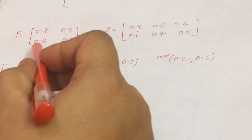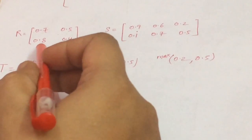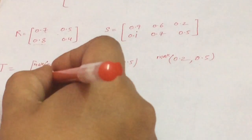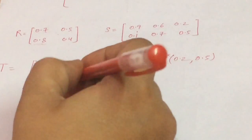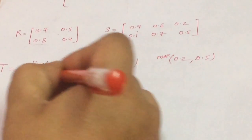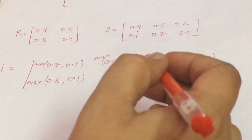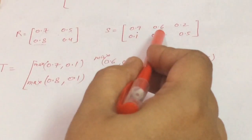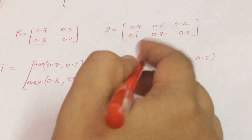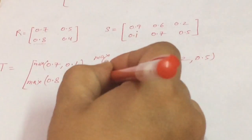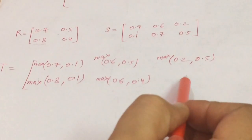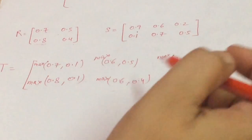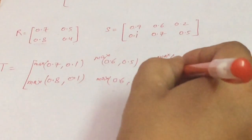For the second row, first element: minimum of 0.8 and 0.9 is 0.8, and minimum of 0.4 and 0.1 is 0.1. For the second row, second element: minimum of 0.8 and 0.6 is 0.6, and minimum of 0.4 and 0.7 is 0.4. For the second row, third element: minimum of 0.8 and 0.2 is 0.2, and minimum of 0.4 and 0.5 is 0.4. Then we find the maximum of each pair.